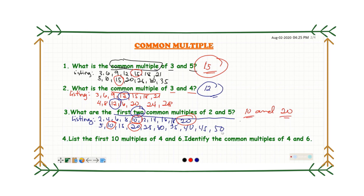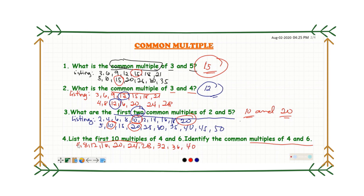Next example: list the first ten multiples of four and six and identify the common multiples. So for four: four, eight, twelve, sixteen, twenty, twenty-four, twenty-eight, thirty-two, thirty-six, and forty. For six: six, twelve, eighteen, twenty-four, thirty, thirty-six, forty-two, forty-eight, fifty-four, and sixty.